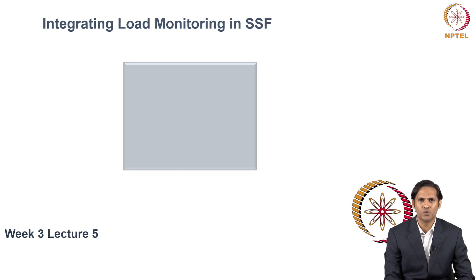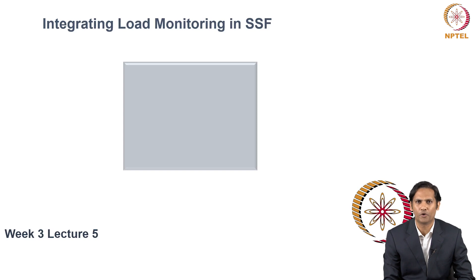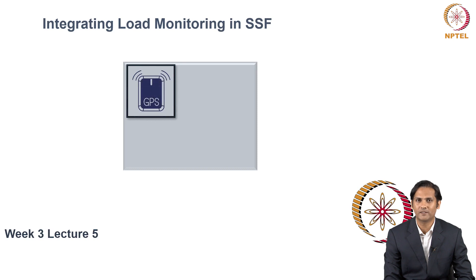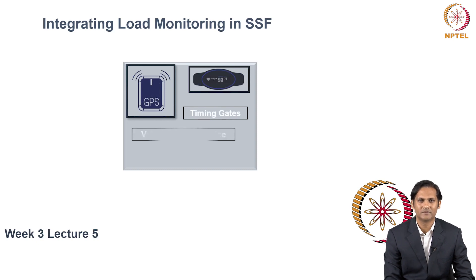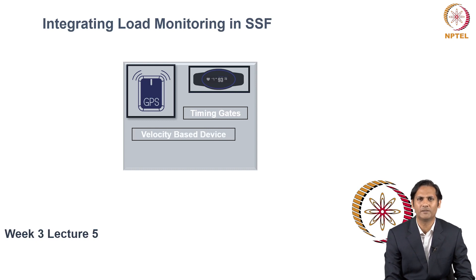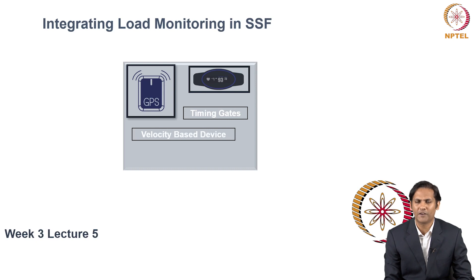In Lectures 2, 3, and 4 we covered different load monitoring technologies for sports-specific fitness variables. These are GPS systems, heart rate monitor systems, timing gate systems, velocity-based training devices, and load training systems.